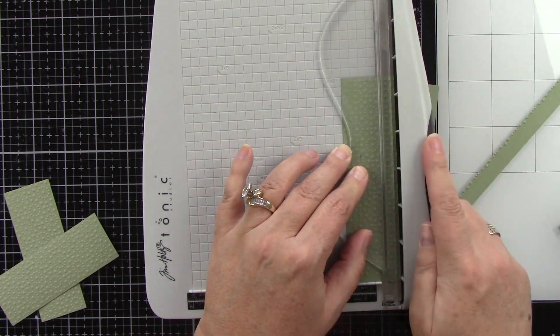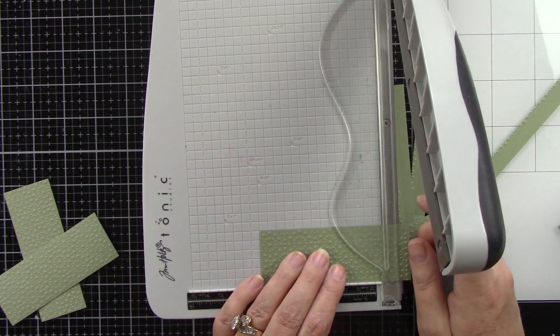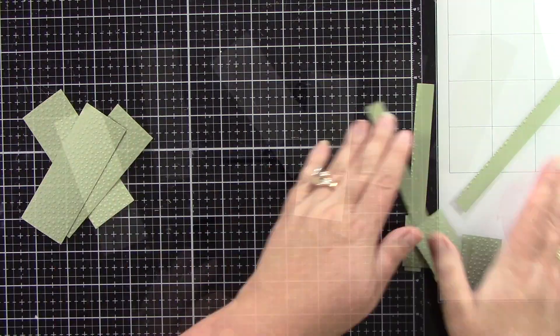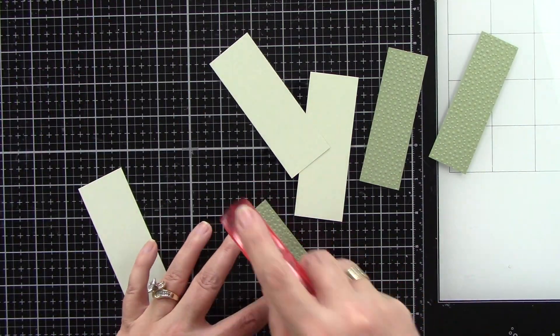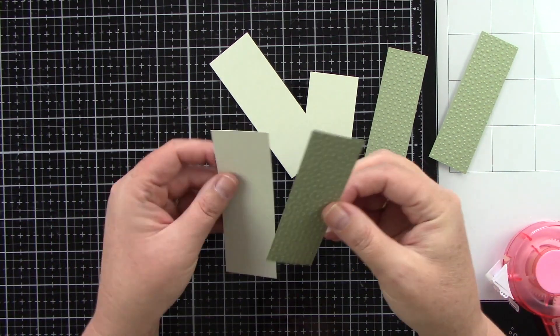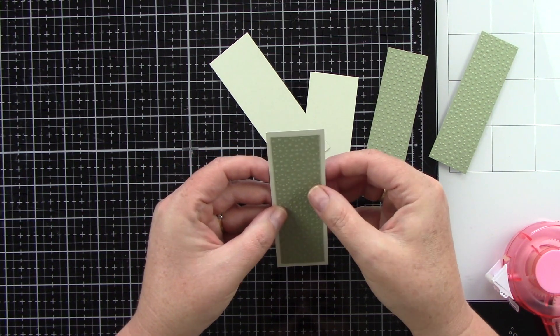Then I'm going to have a lighter green mat behind it. All of this cardstock is from Cardstock Warehouse and they've got some really beautiful fancy names that I have no idea how to pronounce so I'm not even going to try. So the lighter green panels are one and a half inches by four and a quarter inches.